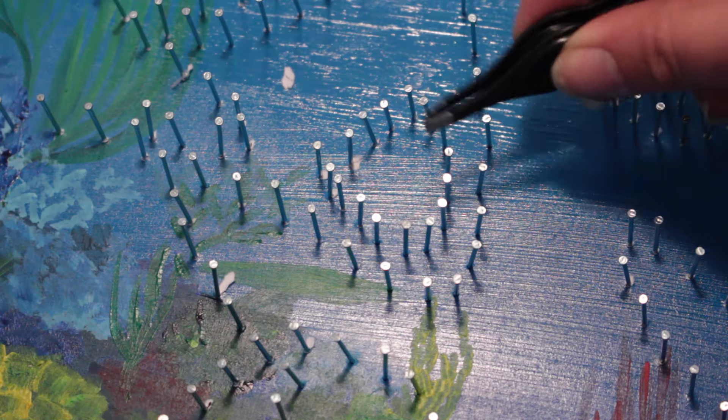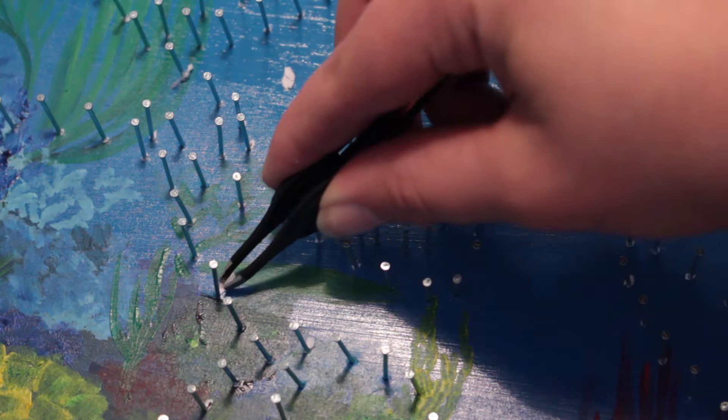Now there might be some smaller pieces of paper on the nails, so take a tweezer and just remove them.